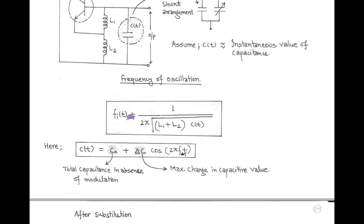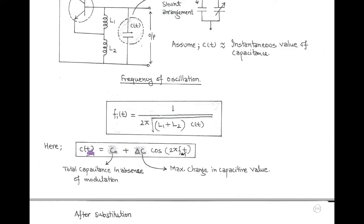By using this capacitance value with L1 and L2, we can determine the frequency of oscillation. The frequency of oscillation, expressed as instantaneous frequency, equals 1 upon 2π times the square root of (L1 + L2) into C(t). Here, C(t) is the instantaneous value of capacitance, and it equals C₀ plus ΔC cos(2π fm t).